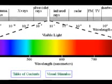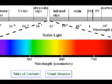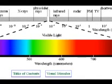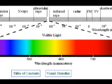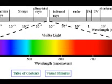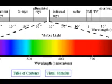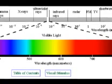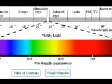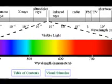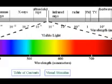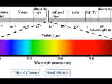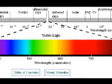Remember, the seven major colors seen on the visible spectrum are not all primary colors. The only primary colors in the visible spectrum are red, yellow, and blue.